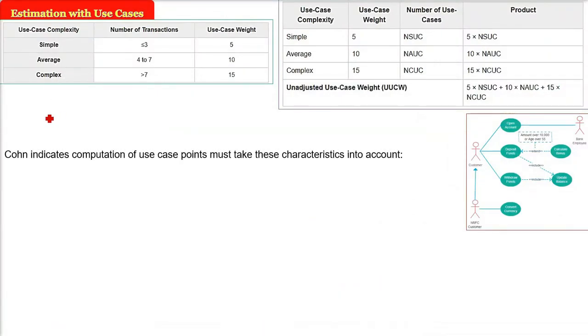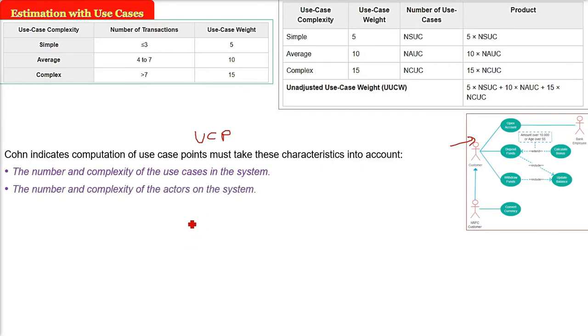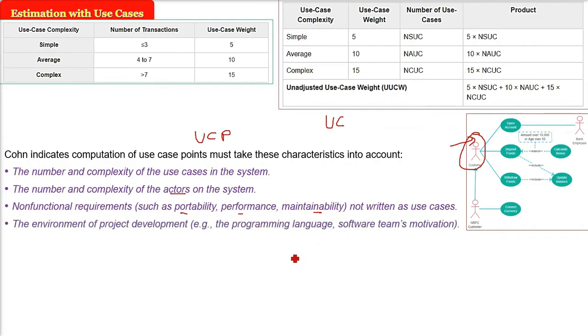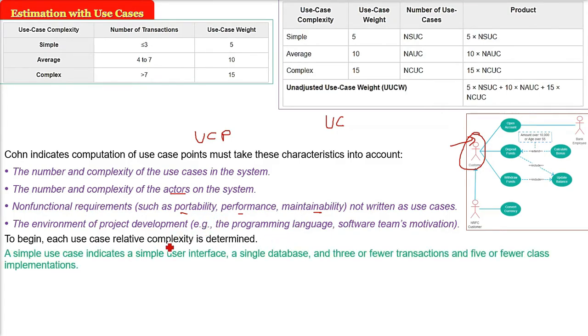Cohen indicates computation of use case points must take certain characteristics into account. First, the number and complexity of use cases. Second, the number and complexity of actors in the system. Third, non-functional requirements like portability, performance, and maintainability. Fourth, environmental factors for project development: programming language and software team motivation. To begin, we need to determine the complexity of each use case.